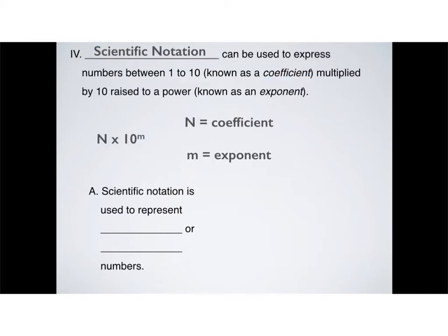So, the general format for scientific notation looks like this: N times 10 raised to the power m. N is our coefficient, which we literally just talked about, and has to be a number from 1 to 10. M, on the other hand, is an exponent. And so, the exponent also has to be a nice whole number, and it can be both positive or negative.